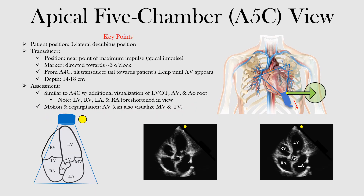In a previous lecture, we looked at the apical four-chamber view of the heart. Now we're going to look at the five-chamber view. This is not much different, but there are some different structures we can see, and we'll look at those here.